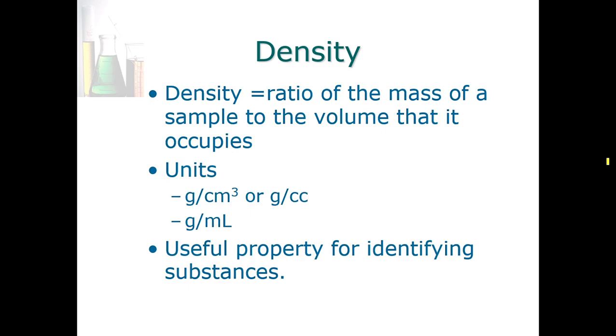Some properties actually represent ratios of other properties. Density is a very useful property because pretty much every substance has a unique density. It's the ratio of the mass of the sample to the volume that it occupies, and we're familiar with units such as grams per cubic centimeter, which is sometimes abbreviated cc, or grams per milliliter. It's a useful property for identifying substances.